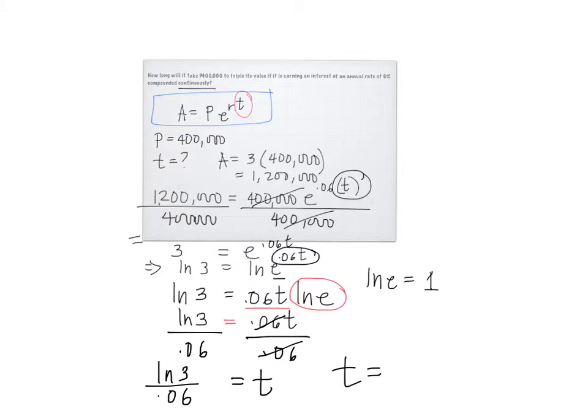To finally solve for t, we just need to compute this value through your calculator. So we have ln 3 divided by 0.06, this will give us about 18.31. So approximately, the 400,000 principal value will triple itself after 18 years.